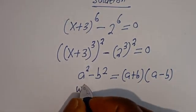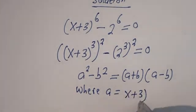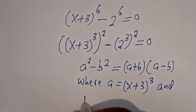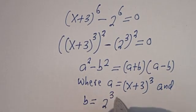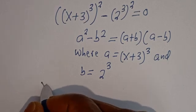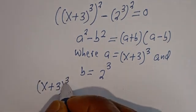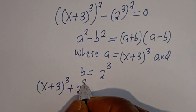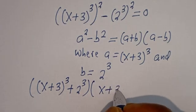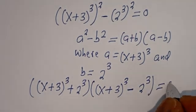Where a is equal to x plus 3 to the power of 3, and b is equal to 2 to the power of 3. Substituting, this can be written as x plus 3 to the power of 3 plus 2 to the power of 3, bracket, x plus 3 to the power of 3 minus 2 to the power of 3, is equal to 0.